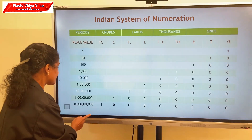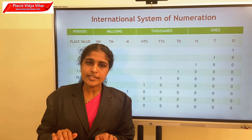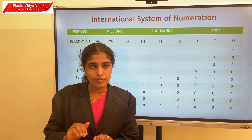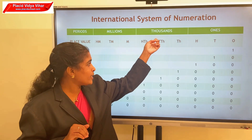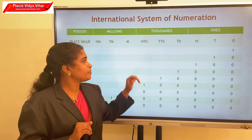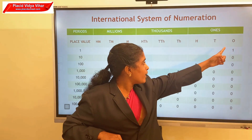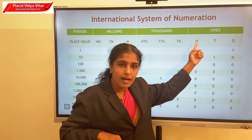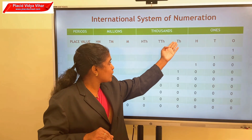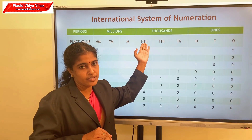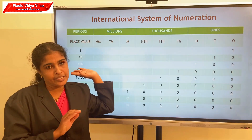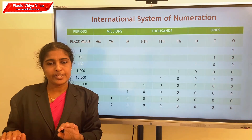Next, our international system of numeration. In the international system, each period consists of three place values. The first period is ones, next period thousands, then the next period is millions. The first period consists of ones, tens, hundreds. The next period consists of thousands, ten thousands and hundred thousands. The next period consists of millions, ten millions and hundred millions. This is the international system of numeration.